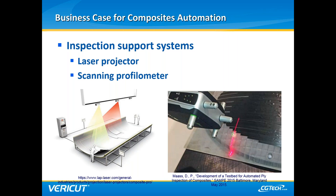Manual inspection can become automated inspection. A scanning profilometer — mounted on the same motion platform as the end effector or a nearby platform — can scan the part either simultaneously to material being placed or just after placement. Generated data is compared to the nominal layout and used to identify overlaps, gaps, bridging, twisted tape, splices, and other defects.